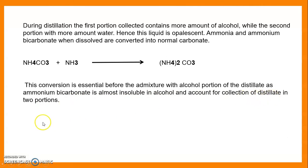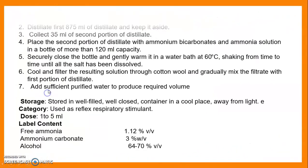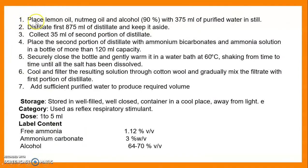The distillate is collected in two portions. First, place lemon oil, nutmeg oil, and 90% alcohol with 375 ml of purified water in the still. Distil and collect the first 875 ml of distillate and keep it aside. Then collect 3.5 ml of the second portion of the distillate. Place the second portion with ammonium bicarbonate and ammonia solution in a bottle with capacity more than 120 ml.